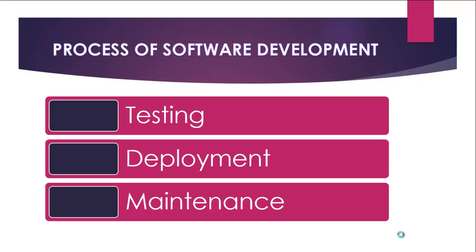Limitations identified during deployment are addressed through the next phase: maintenance. Every software that has been deployed must be maintained from time to time. Maintenance means updating the software, adding new features, providing support to end users, and removing bugs or errors that are noticed as users begin to use the software. The maintenance process is a continuous process to enhance the workability of the software.